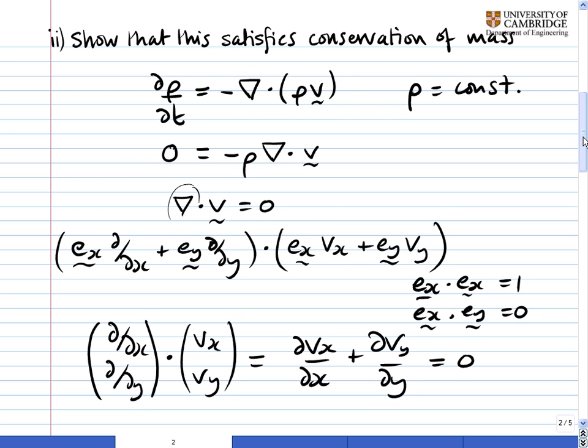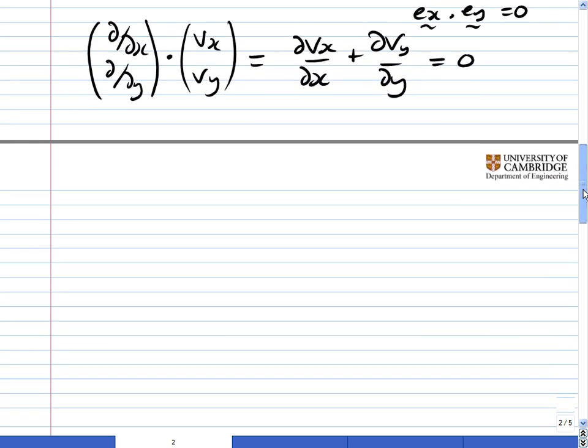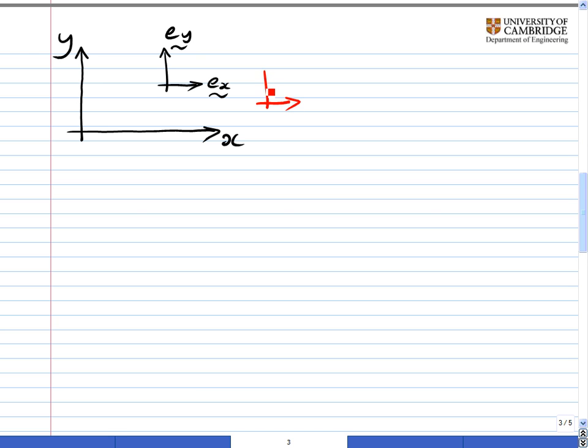Now as an aside, I want to show why that works in Cartesian coordinates, but not in polar coordinates. And it's because in Cartesian coordinates, no matter where you move to in your coordinate system, the vectors ex and ey always stay pointing in the same direction.